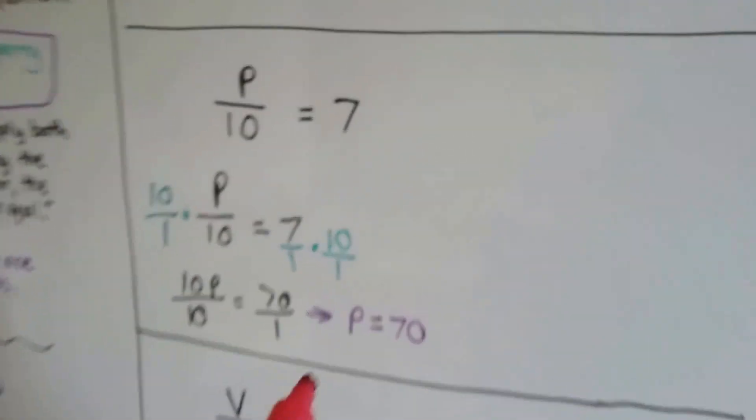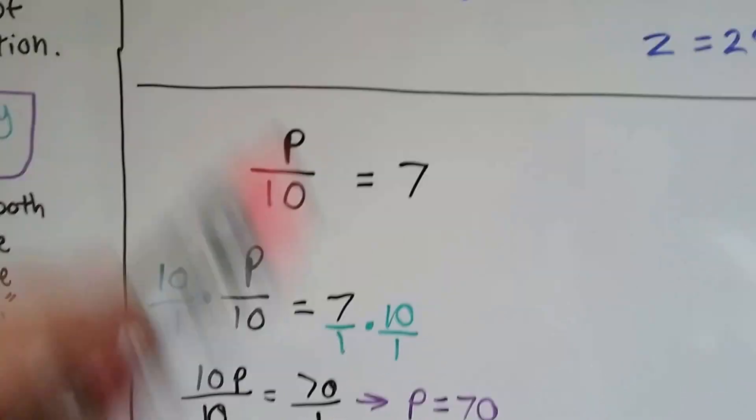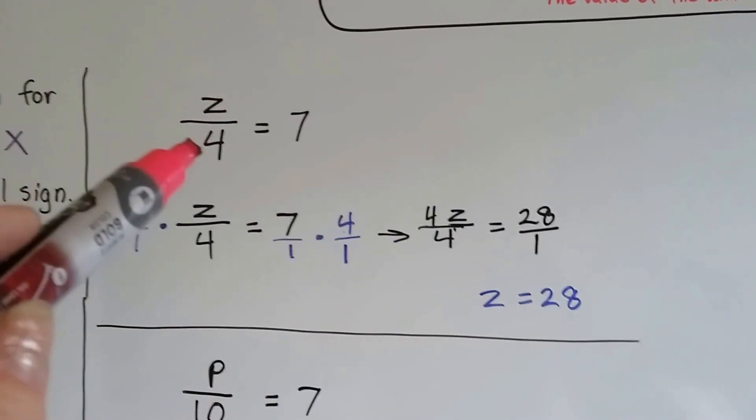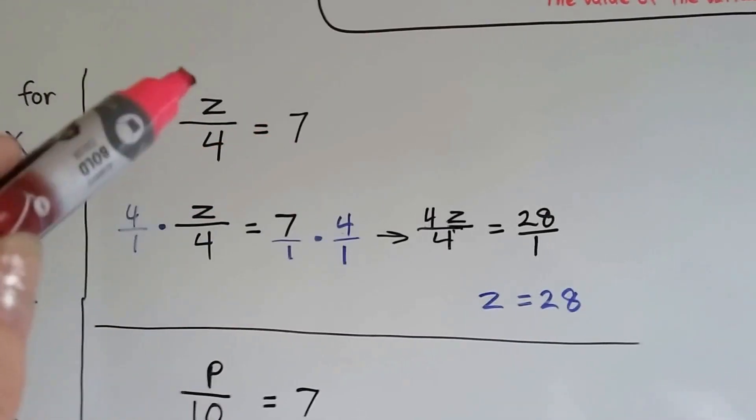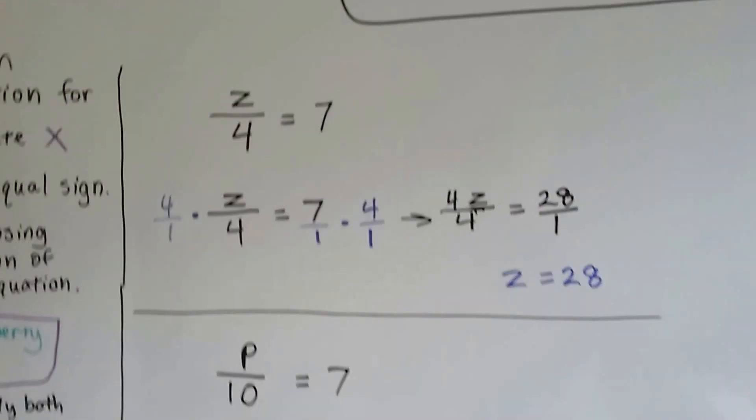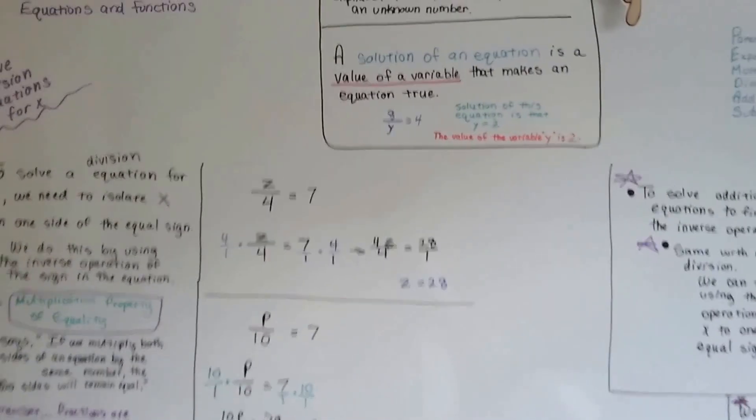Let's see if it's true. Is p really 70? 70 over 10 equals 7? Yep, that's true. How about this one? z equals 28. Is 28 over 4 really 7? Yep, because 7 times 4 is 28. So it works, and we can check them too. That's how we solve division equations for x.